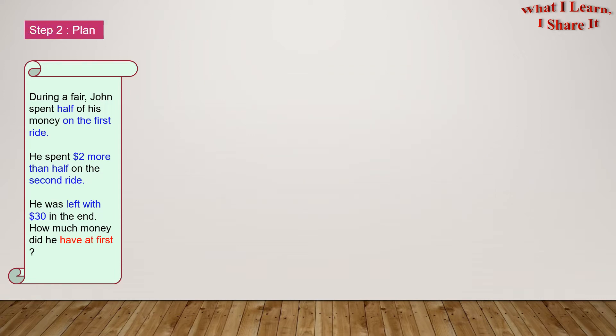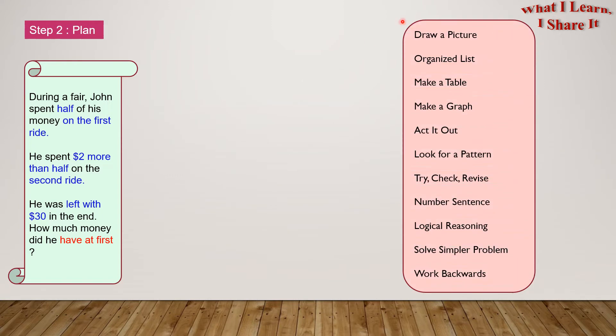Step 2. Plan. Now let's think about the strategies. Here are all the strategies. Draw a picture, organize list, make a table, make a graph, act it out, look for a pattern, try check revise, number sentence, logical reasoning, solve a simpler problem, and work backwards. I'm going to use draw a picture and work backwards.